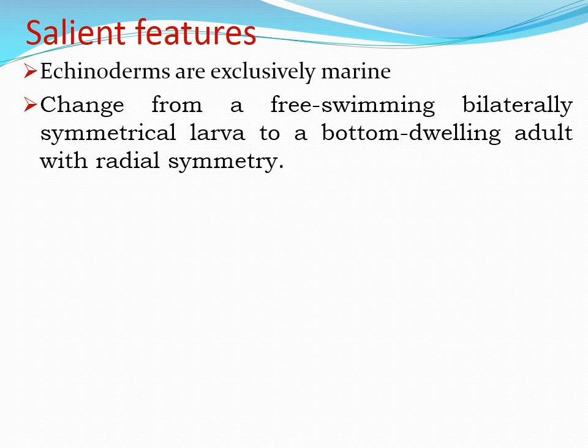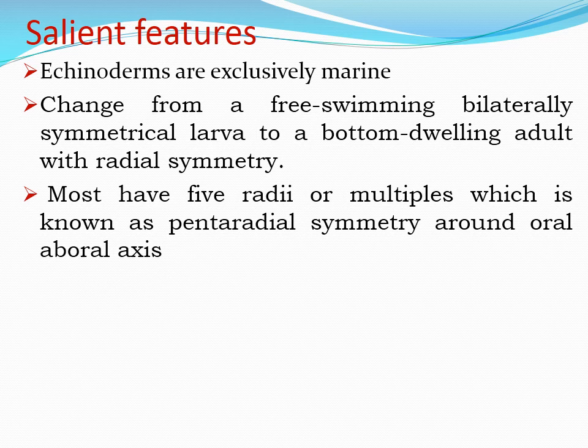One peculiarity of Echinodermata is that all the organisms we have studied so far are bilaterally symmetrical, but here the larval form is a free-swimming bilaterally symmetrical form, while the adult has radial symmetry — specifically pentaradial symmetry with five radii or multiples, arranged around an oral-aboral axis.